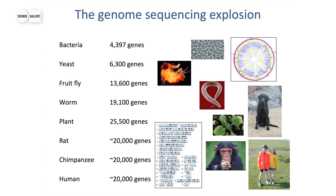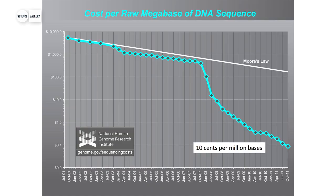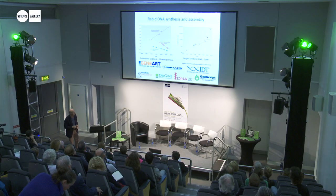The cells we are mainly focusing on in synthetic biology are primarily bacterial cells — very simple, single cells. This is yeast. This is Bacillus subtilis, a harmless soil bacteria. This is E. coli, which is a standard laboratory organism. To some extent, people are beginning to exploit mammalian cells, but most application work is done in these bacterial and yeast cells.